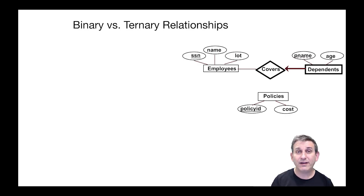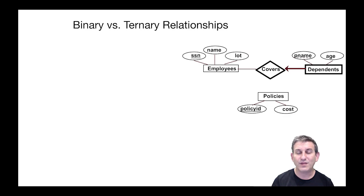Up to now, we've mostly looked at binary relationships — relationships between pairs of entities. It's perfectly reasonable to have ternary three-way relationships, or even more, if that's what's appropriate for your schema and it models the real world well. So let's look at a variation of what we did before with the ternary relationship and see how it changes things.